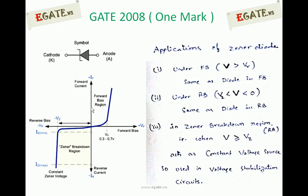A Zener diode is generally treated as a heavily doped silicon diode, so it also has a forward bias voltage of 0.7V. If you apply more than 0.7V, current flows; otherwise the current is approximately equal to zero.